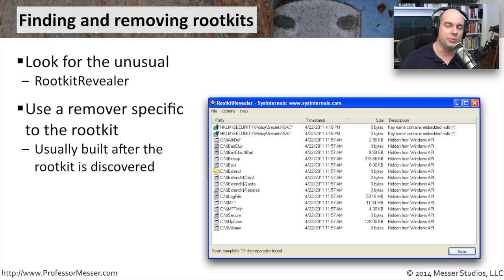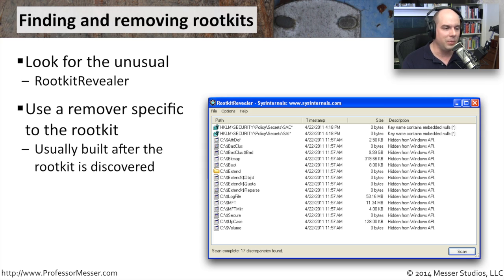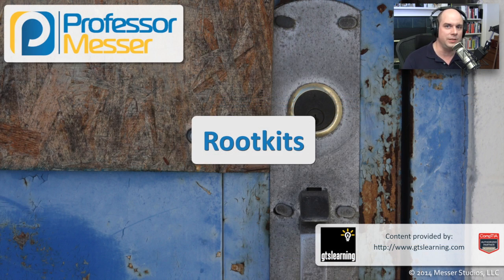There are also ways to remove rootkits using very specific removal software. Because rootkits may use a very specific method to get onto your computer, you very often need a very specific uninstaller for that rootkit. Once somebody discovers the rootkit, sees where it's embedded, and understands what it's doing, it is generally much easier to create something that can remove that rootkit once and for all.